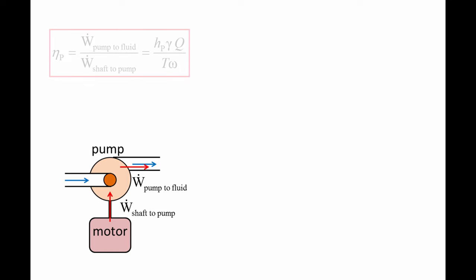The efficiency of a pump is the power transferred from the pump to the fluid divided by the power transferred through the shaft to the pump. The power transferred from the pump to the fluid is equal to the pump head, HP, times the specific weight, gamma, times the volumetric flow rate, Q.